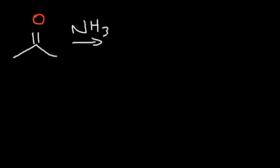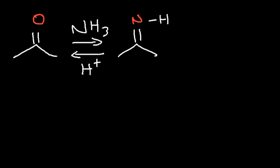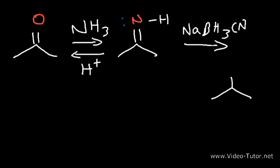In this video we're going to go over the reductive amination of ketones, which can also work for aldehydes. In this process we convert a ketone into an amine. The first step is to add ammonia or a primary amine. This reaction works best under mild acidic conditions at a pH of around 4 to 5. Adding ammonia produces an imine, and then we reduce the imine with sodium cyanoborohydride to get the final amine product.